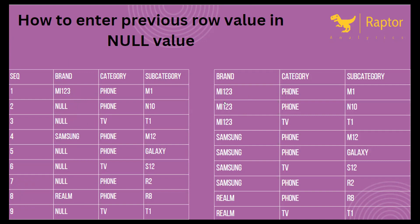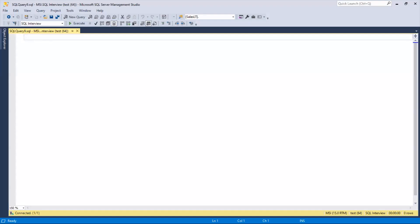So for rows two and three, we need to paste 'my one two three' because that is the brand name. Again where 'Samson' is, we paste Samson, and where 'Realme' is, we paste Realme. We have a table with sequence number, brand, category, and subcategory columns. Now I'll move to SQL Server and show how we can achieve this.